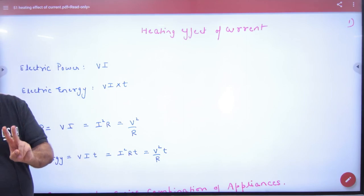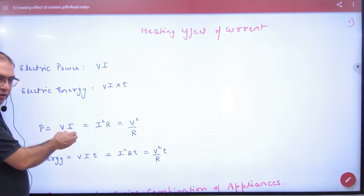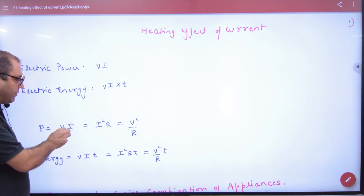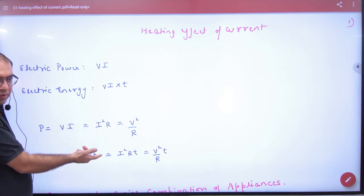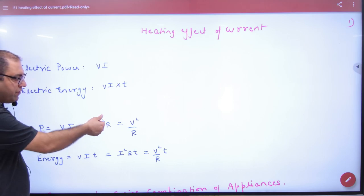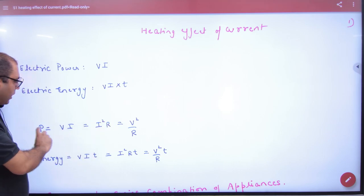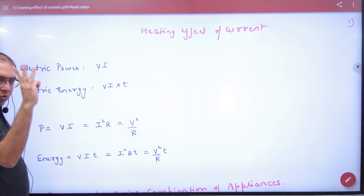Next, power V into I, but V is what is IR, so multiply it by I square R. And in the place of I, V by R, then V square by R. So what is P? P has three formulas that you can apply.